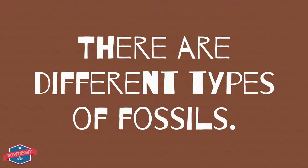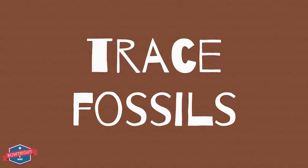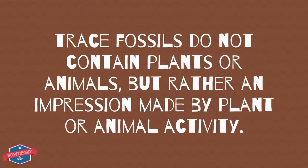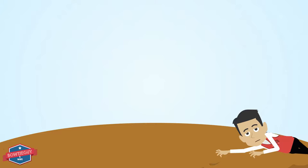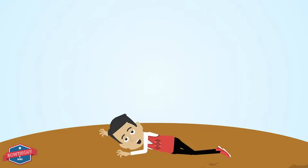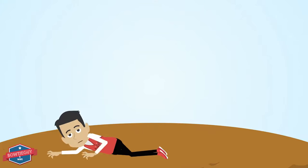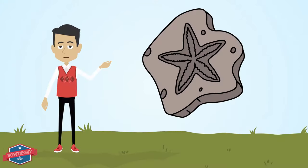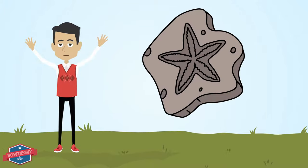There are many different types of fossils. First, let's talk about trace fossils. Trace fossils do not contain plants or animals, but rather an impression made by plant or animal activity. As I track across this mud, I'm leaving tracks — this is an example of a trace fossil.